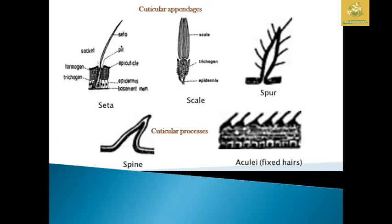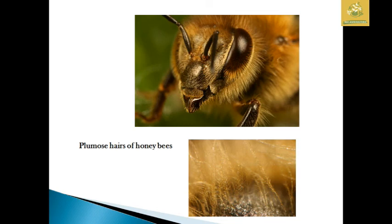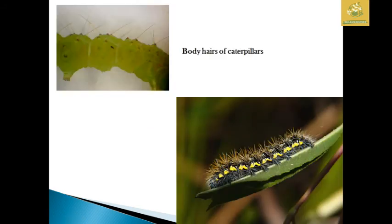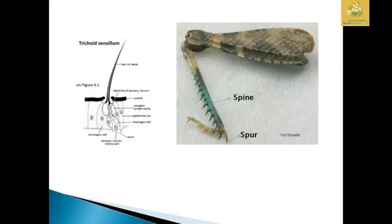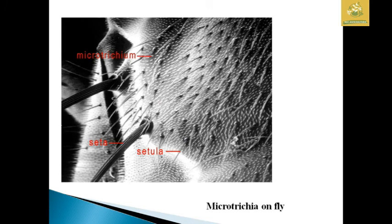I have given pictures of setae, scales, spur, and spine. Setae are fixed hairs on the insect body. The plumose hair of the honeybee is present between the two antennae. Body hairs of caterpillars can be seen under the microscope. Clothing setae are present on wings. Scales are seen on moths and butterflies. Spurs are movable and spines are immovable — both are used for defensive mechanisms in insects like grasshoppers. Microtrichia are small hair structures found in the cuticular layer, seen in flies.